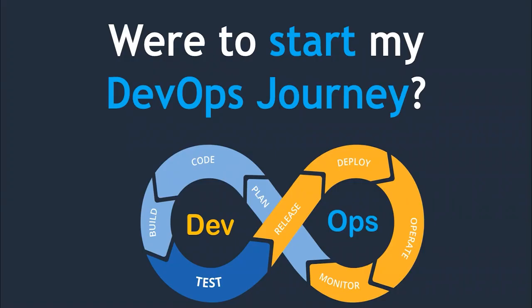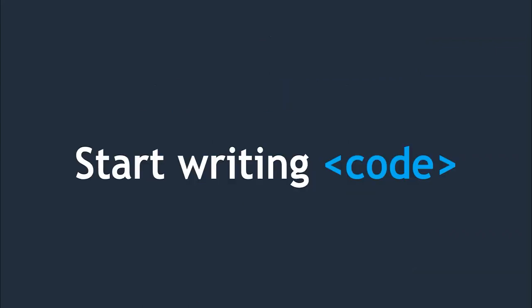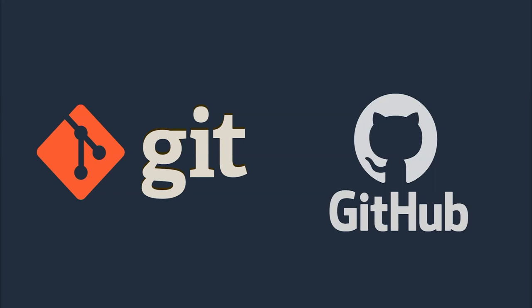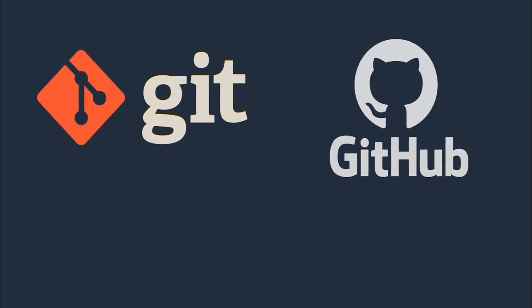Are you confused about where to start your DevOps journey? Think about where the DevOps process starts — technically it starts from writing code. Assuming you're not dealing with application code, the next immediate step is maintaining the source code. Maintaining source code with versions and working with a group of people is unavoidable in most projects. That is where Git and GitHub come into the picture — learning them is the right starting point for your DevOps journey.